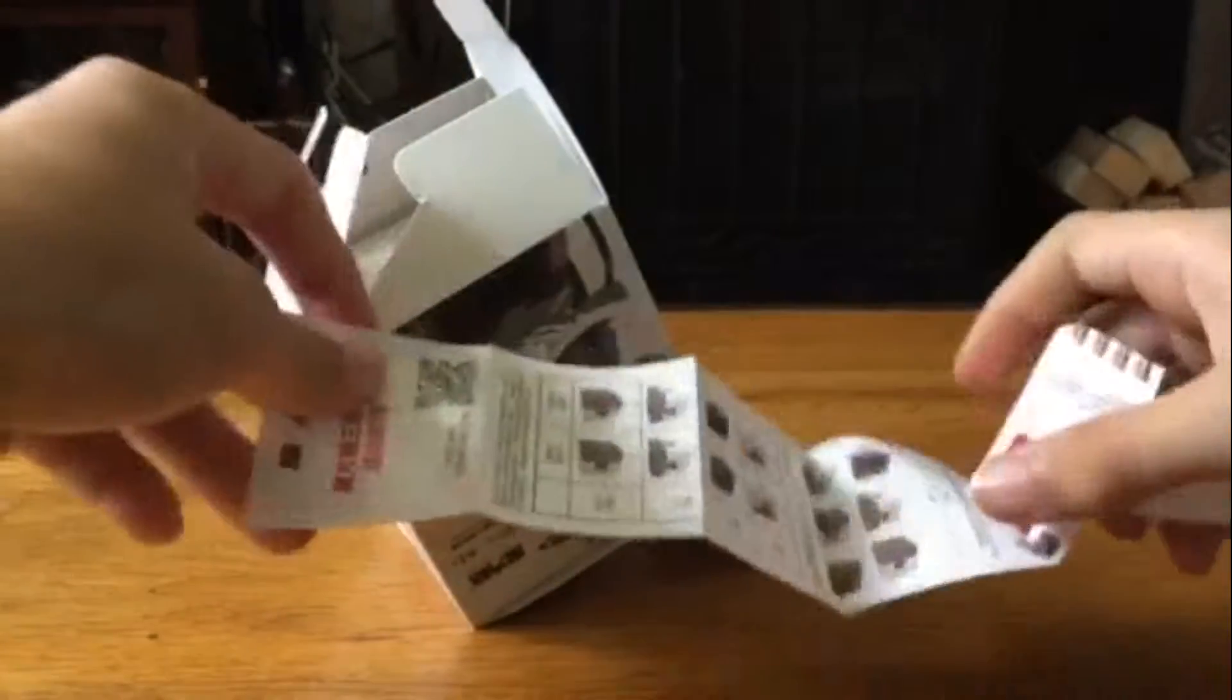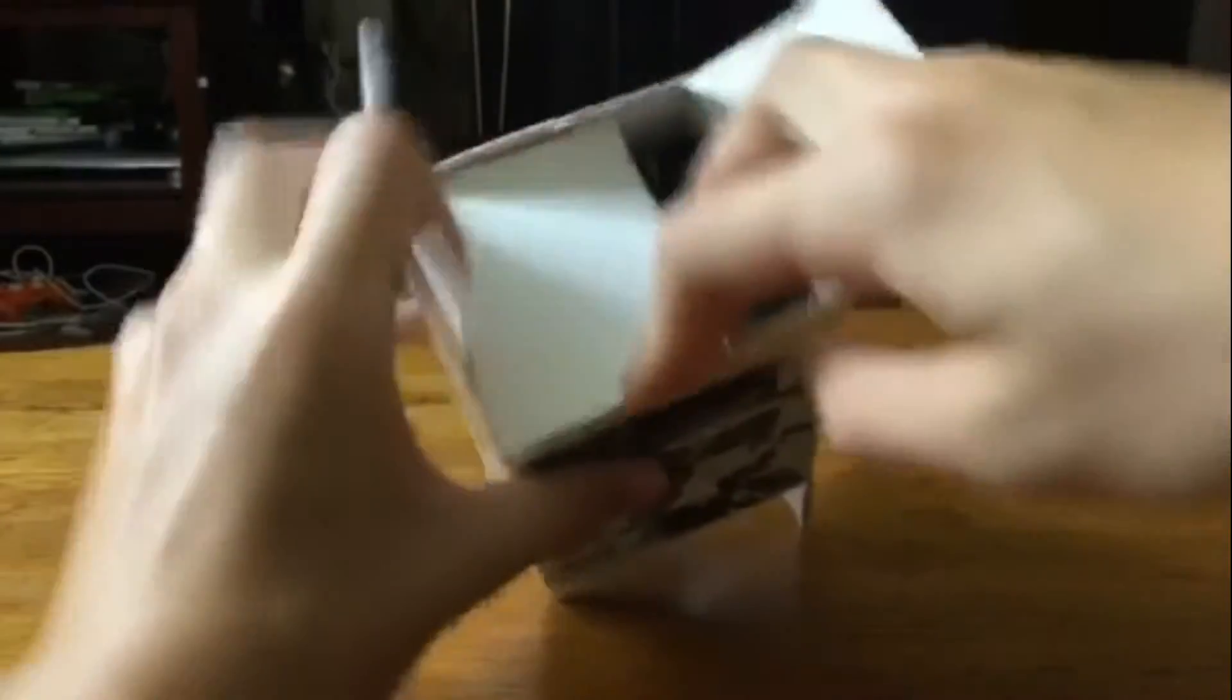And here comes with a little algorithm sheet thing, just one long one of those. Let's see here. Comes with a nice little cube pouch for this cube. And let's get right into it.